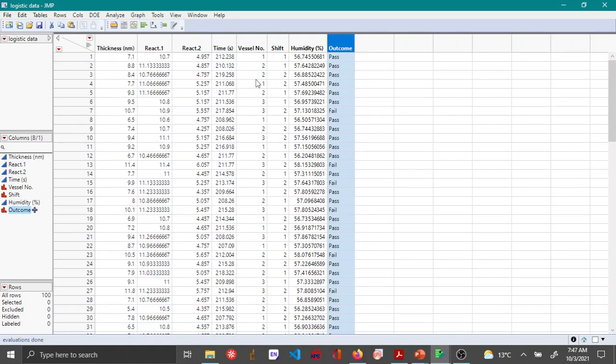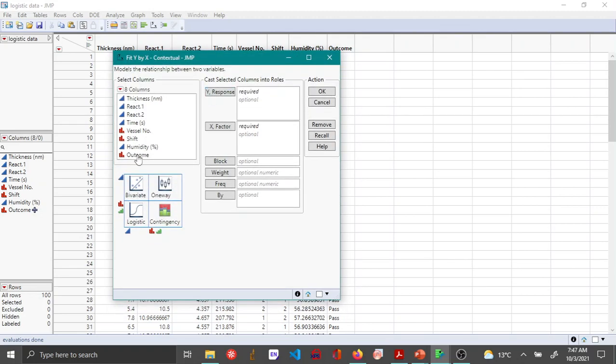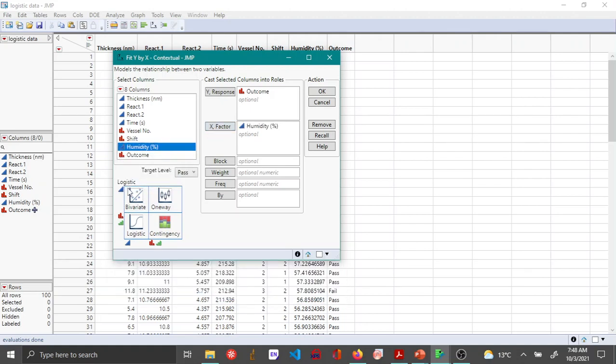In order to do the logistic regression, I open the fit y by x menu from the analyze menu. Here I choose outcome as my y response, humidity as my x factor. By default, JMP says it will plot a logistic curve. The target level here is either pass or fail because your y response is a two-level categorical variable. We are interested in knowing the target level fail because we're trying to determine the probability of fail, so you choose fail and then say okay.